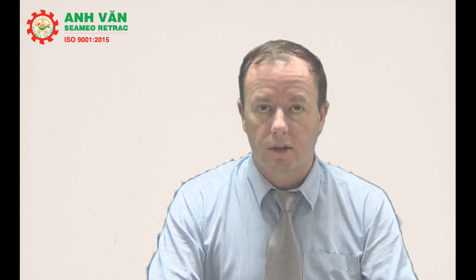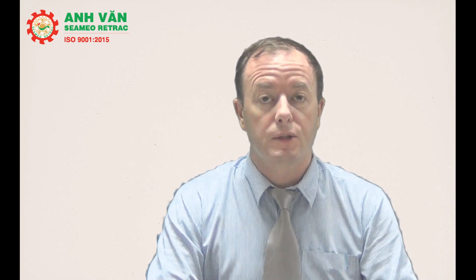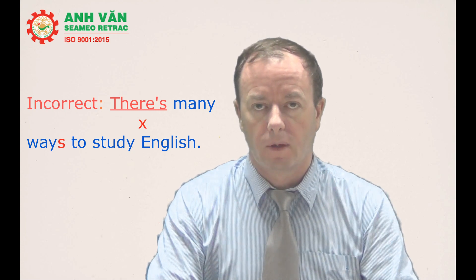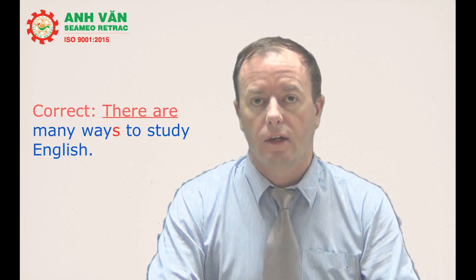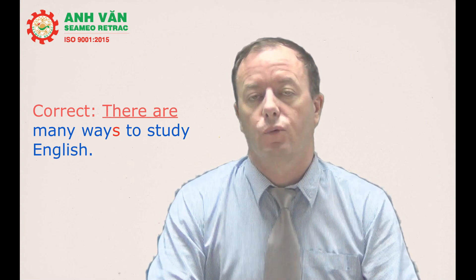The next mistake is 'there is' versus 'there are.' Sometimes when we speak English we use 'there is' when talking about a plural because it sounds more natural. For example: 'There's many ways to study English' is technically incorrect, but it sounds better. The correct way is 'There are many ways to study English,' though using 'there's' in speaking is acceptable.